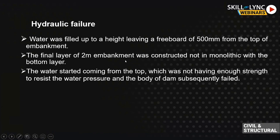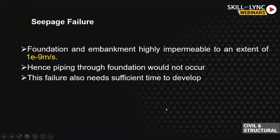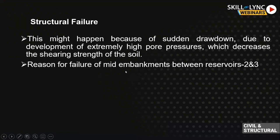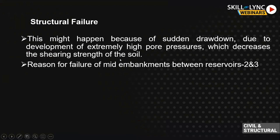Water started coming from the top; the structure did not have enough strength against water pressure, and the body of the dam subsequently failed. Crest failure was also noticed. There was no chance of piping through the foundation as the foundation was highly impermeable. Stability analysis showed factor of safety was high. Two likely failure modes were identified: overtopping and structural failure.